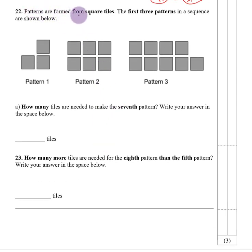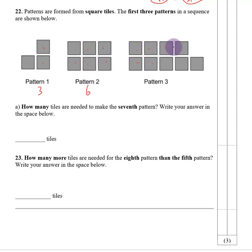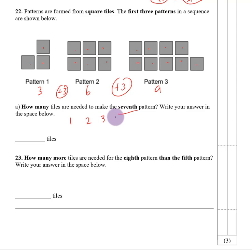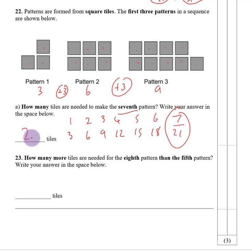Number twenty-two. Patterns are formed from square tiles. The first three patterns are shown: pattern 1 has 3 tiles, pattern 2 has 6, pattern 3 has 9. We are adding 3 each time. Continuing to the seventh pattern: 3, 6, 9, 12, 15, 18, 21. So pattern 7 will need 21 tiles.